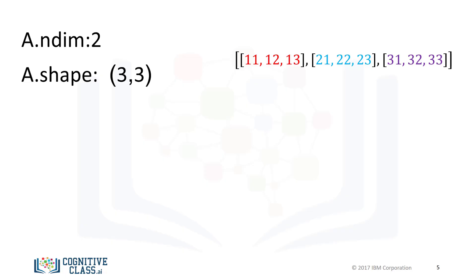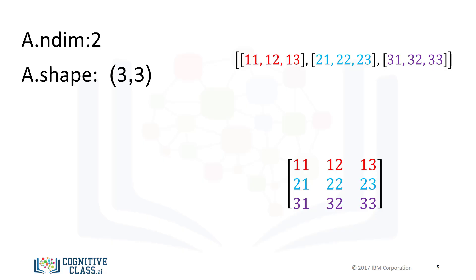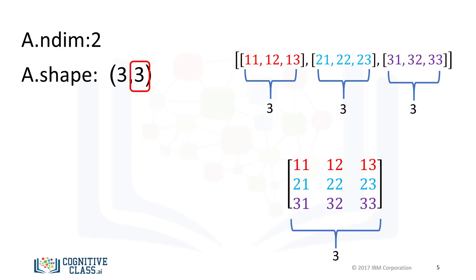As with the 1D array, the attribute shape returns a tuple. It is helpful to use the rectangular representation as well. The first element in the tuple corresponds to the number of nested lists contained in the original list, or the number of rows in the rectangular representation — in this case 3. The second element corresponds to the size of each of the nested lists, or the number of columns in the rectangular array. The convention is to label this axis 0 and this axis 1.